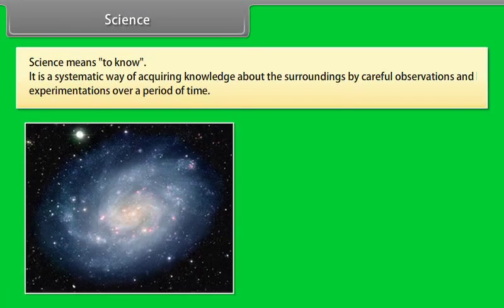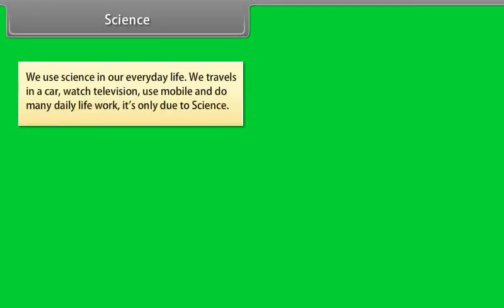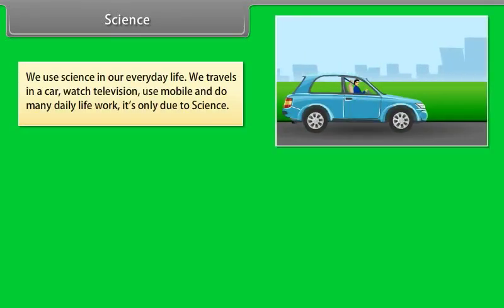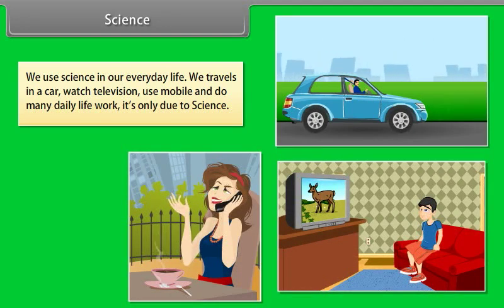Science. Science means to know. It is a systematic way of acquiring knowledge about the surroundings by careful observations and experimentations over a period of time. We use science in our everyday life. We travel in car, watch television, use mobile and do many daily life work. It is only due to science.